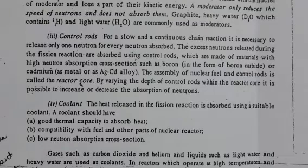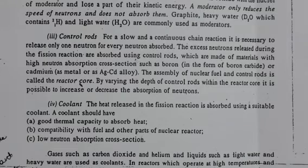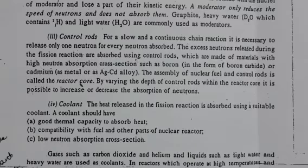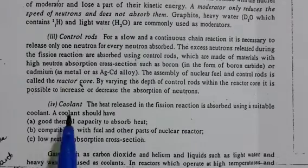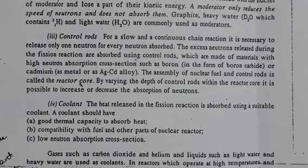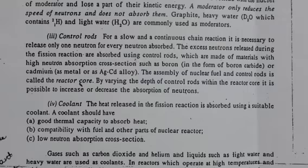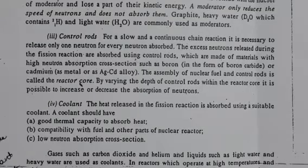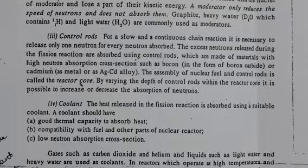By varying the depth of the control rods within the reactor core, it is possible to increase or decrease the absorption of the neutrons. The heat released in the fission reaction is absorbed using a suitable coolant. The coolant should have a good thermal capacity to absorb the heat, and it should have compatibility with the fuel and other parts of the nuclear reactor.